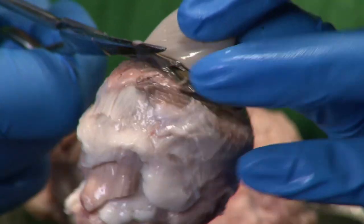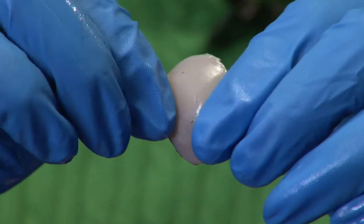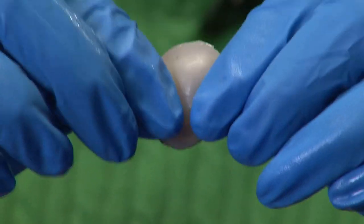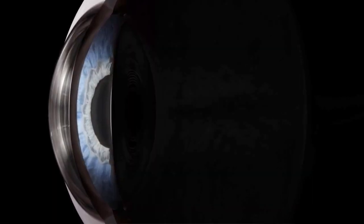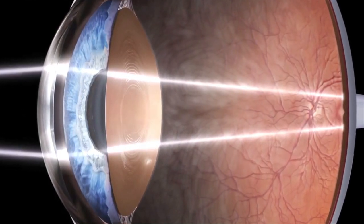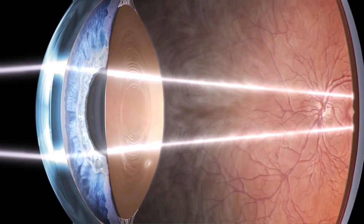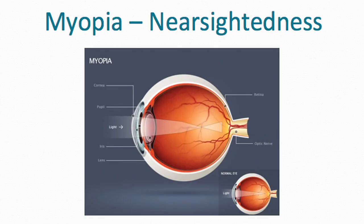If you have issues with the cornea, it can cause refractive errors. If the cornea is too thick, it can cause nearsightedness or myopia; if it's too thin, it can cause farsightedness or hyperopia. The cornea is a transparent tissue that refracts most of the light that enters our eyes. Refractive errors such as nearsightedness and farsightedness are caused by abnormalities within the cornea.